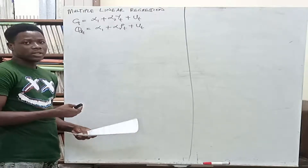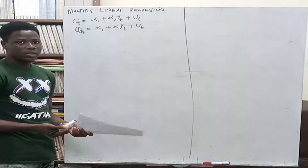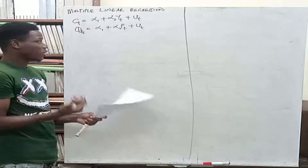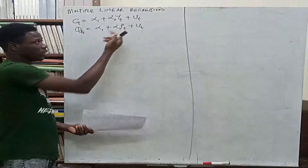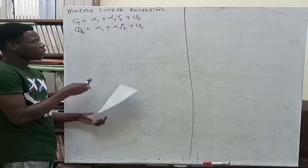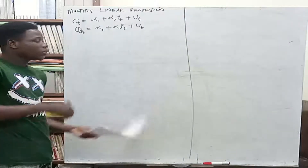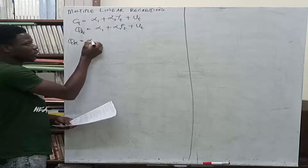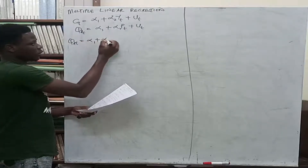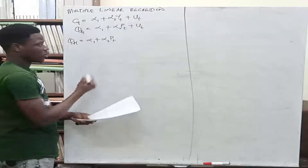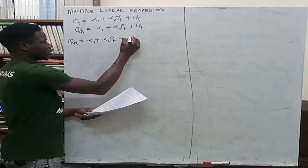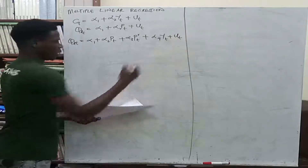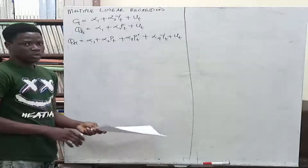The simple linear regression is often inadequate in practice. In reality, there are other factors that affect quantity demanded and consumption, apart from income and price. So there is a need to extend the discussion and include other variables. For example, quantity demanded can be determined by the price of the commodity, the price of related commodities, and the income of the consumer — this is the case of a multiple linear regression model.